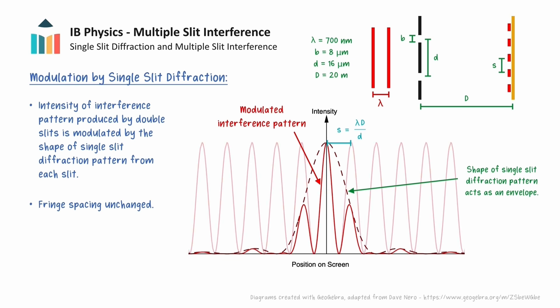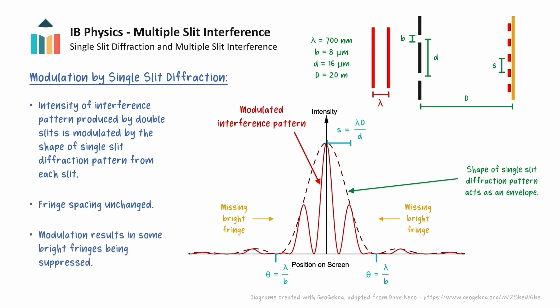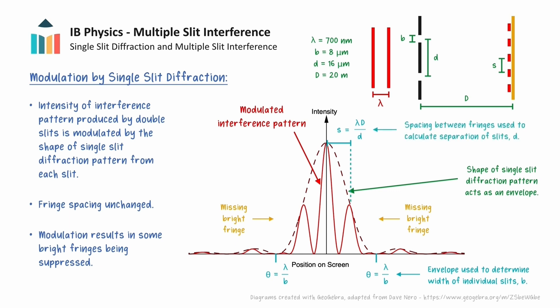This modulation also results in some places where bright fringes from the interference of waves coincide with a minimum of the single slit diffraction pattern. These bright fringes actually end up getting suppressed and appear missing in the overall pattern. When given an interference pattern, it is important to remember that the envelope can be used to determine the width of the individual slits, and the spacing of the narrower fringes can be used to find the separation of the slits.